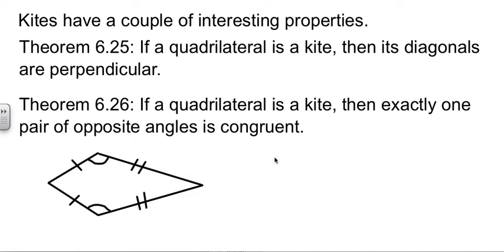And if we have a kite, then exactly one pair of opposite angles is congruent. And it would be the pair where the non-congruent sides come together. So the one marked side meeting the two marked side, this angle, is equal to the one marked meeting the two marked, this angle. The two that are between common sides, you can't say are congruent.